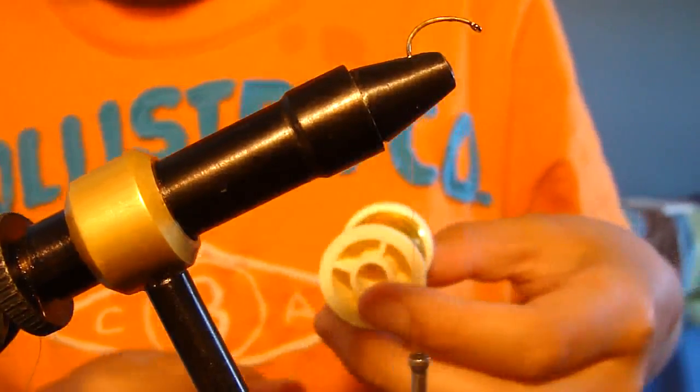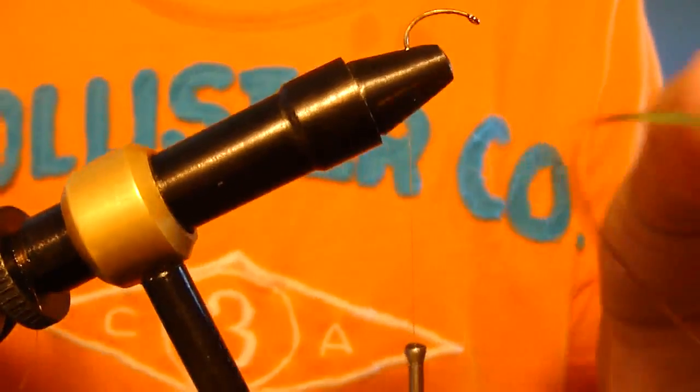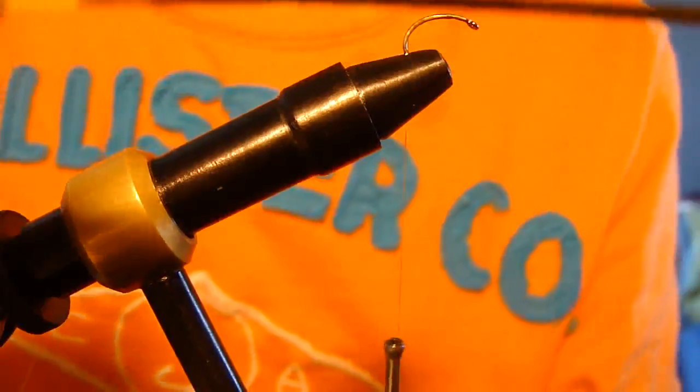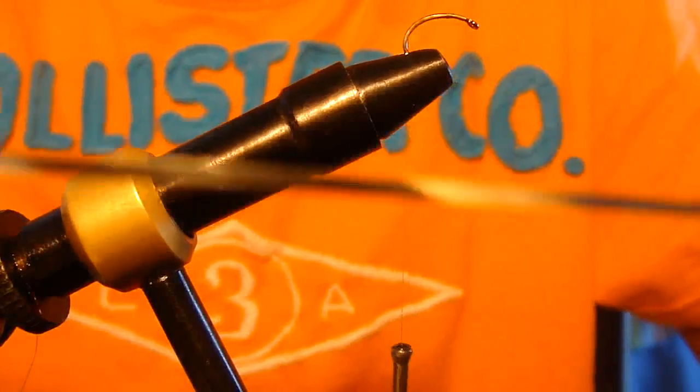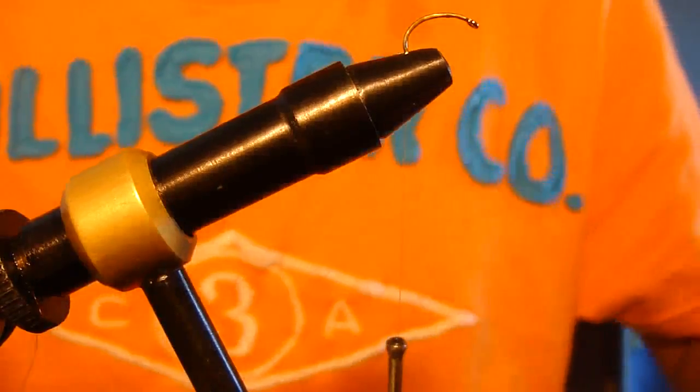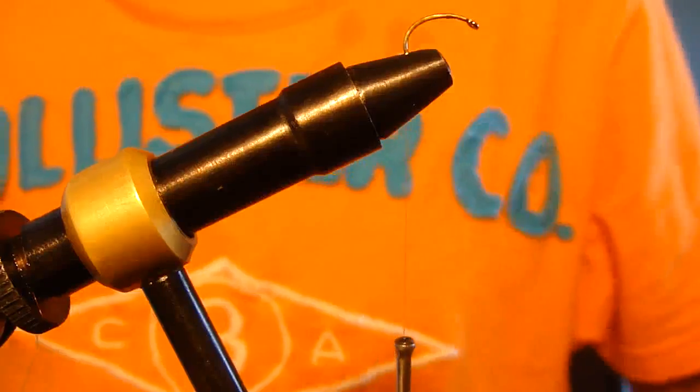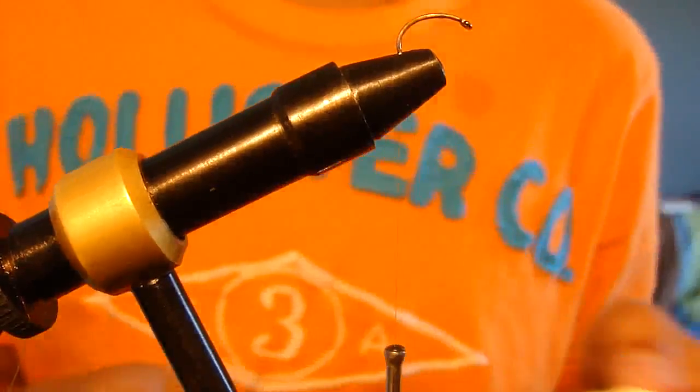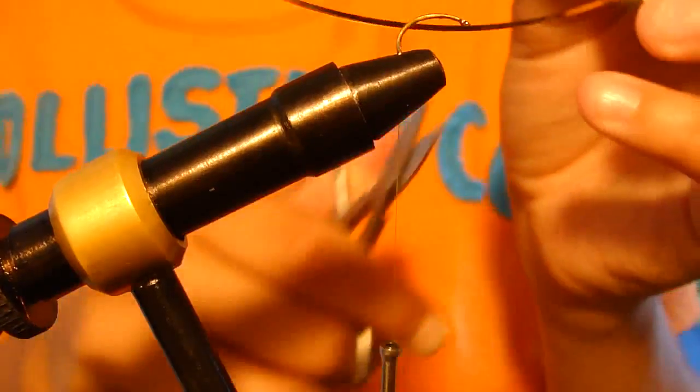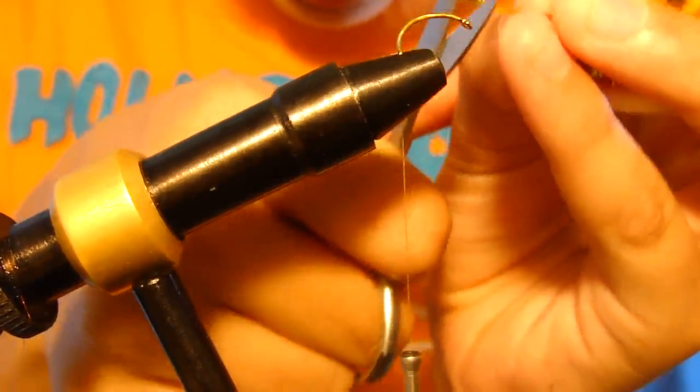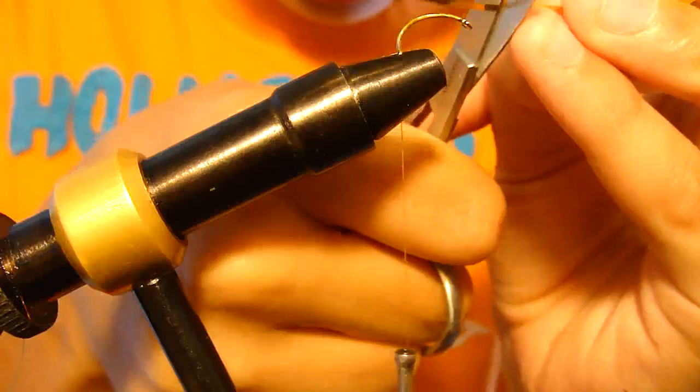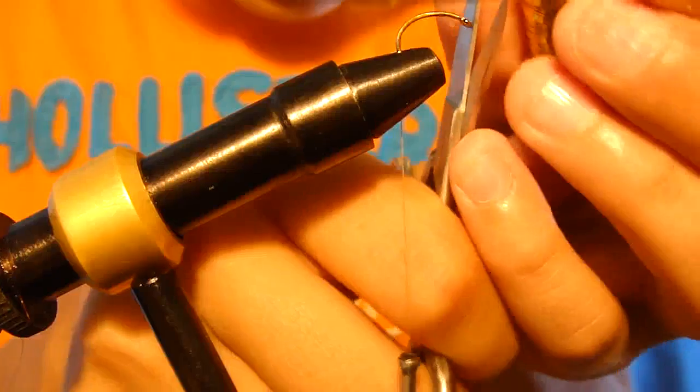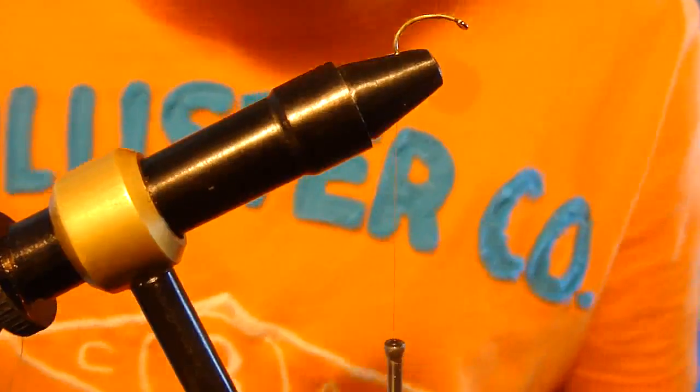And now you're going to tie in your tinsel. And it's double-sided tinsel. It's gold on one side, I don't know if you can see that, silver on the other side. And it is a great attractor because you can see it in the water. It's almost like an indicator. And it works really well to track your fly. And you want it about two times as long as the fly. It's one. You're going to want to do two.